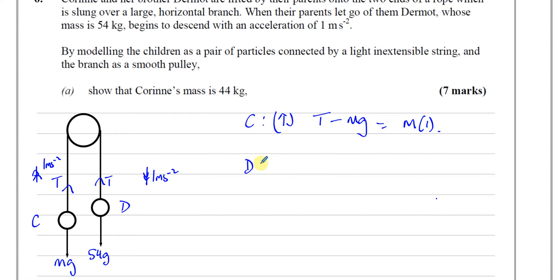And for Dermot, he's going downwards. We can take down as positive. So 54G minus T is equal to his mass, which is 54, times his acceleration, which is 1.